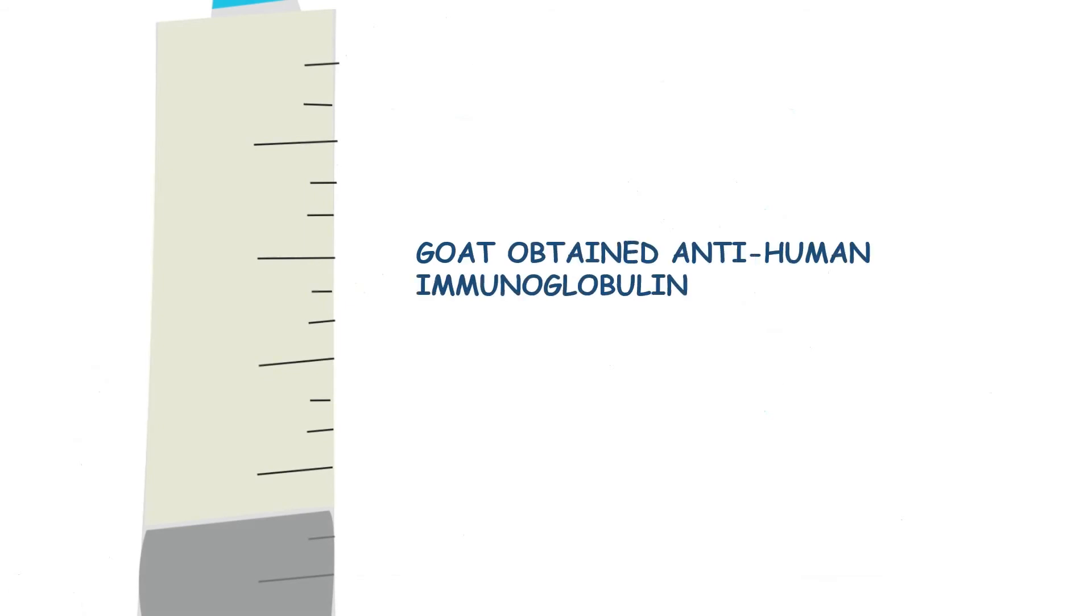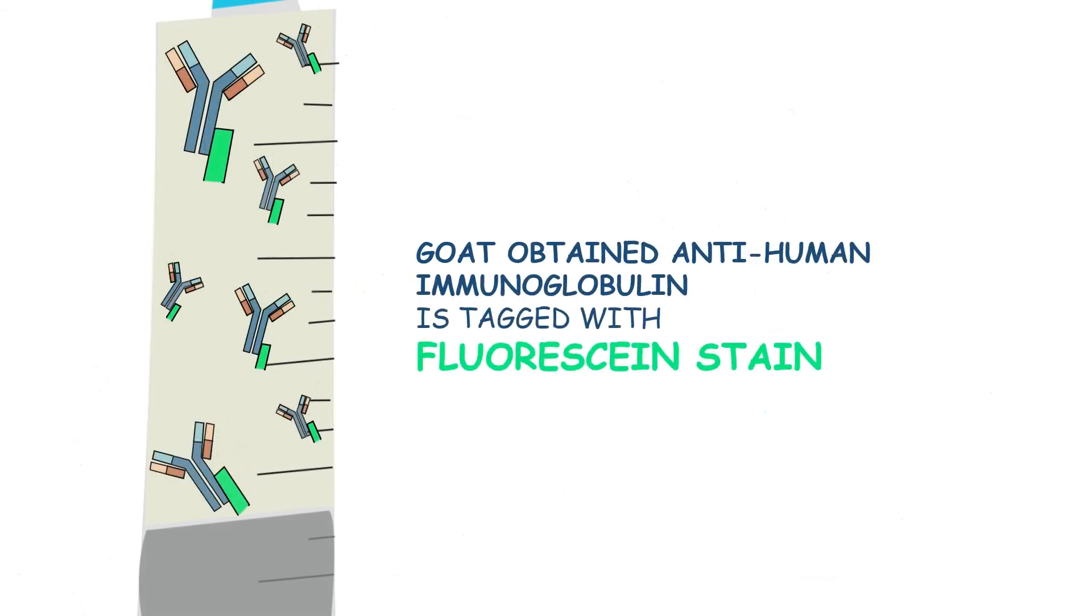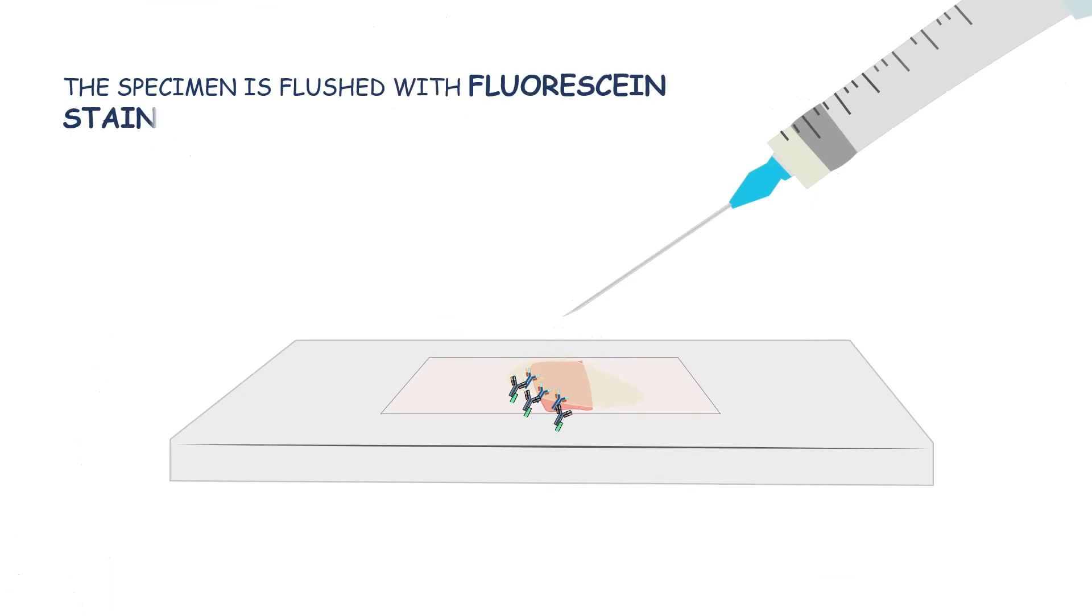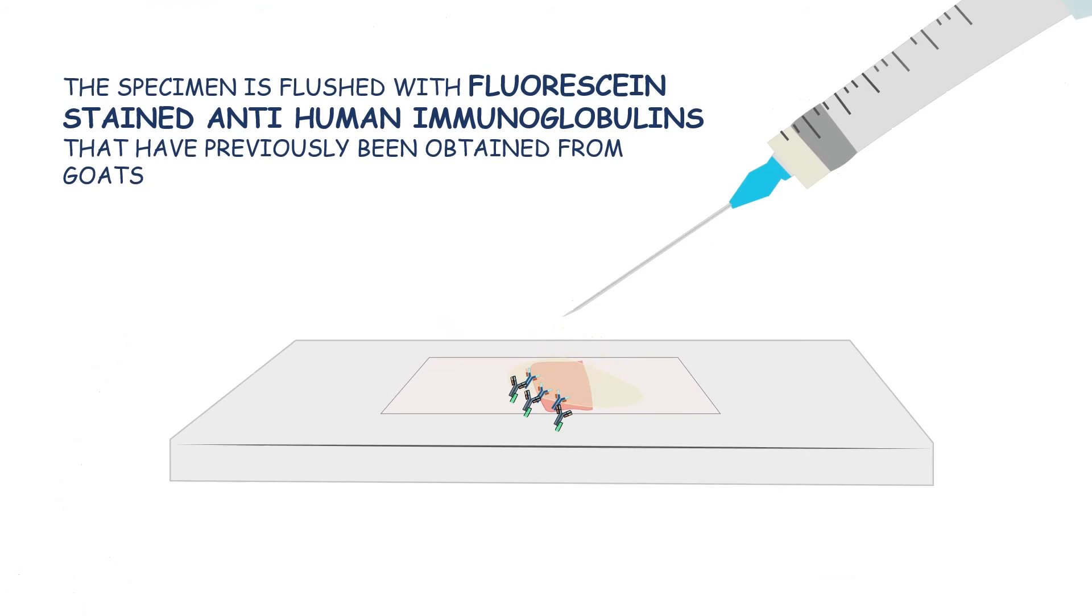The goat-obtained anti-human immunoglobulin is tagged with fluorescein stain. The specimen is flushed with fluorescein-stained anti-human immunoglobulins that have previously been obtained from goats.